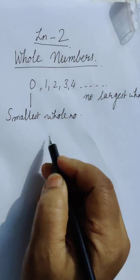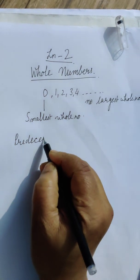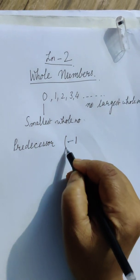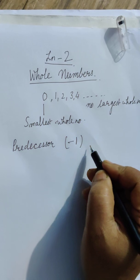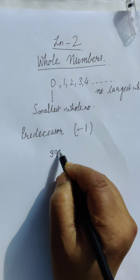Now we come to predecessor and successor. What is a predecessor? When we subtract 1 from any number, we call it predecessor. Like suppose, 399.